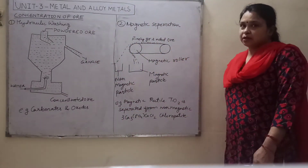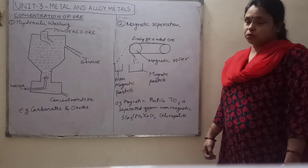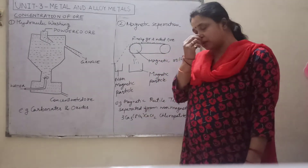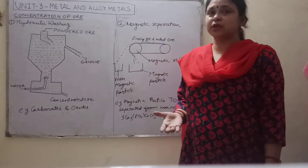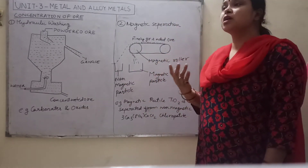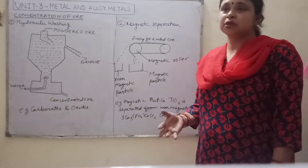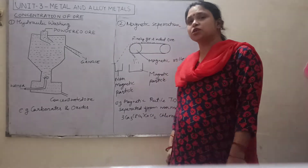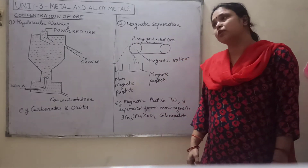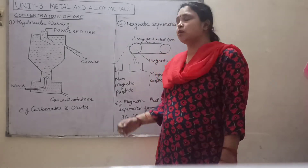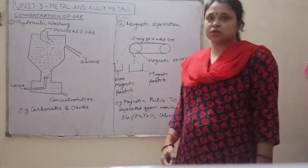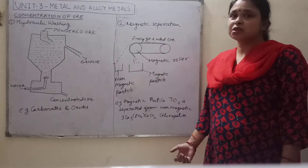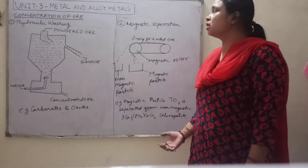To extract metal from its ore, the first step is concentration of ore. Depending on the properties of the combined state of metal, we decide which method to follow. In concentration of ore, we can use hydraulic washing, magnetic separation, froth flotation process, or leaching — there are many methods through which we can concentrate ore.